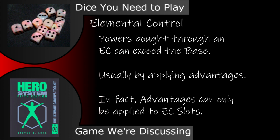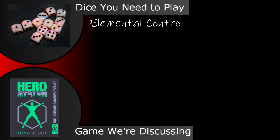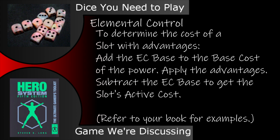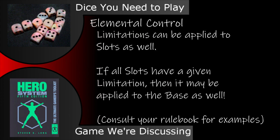It's possible to have powers that can cost more than the elemental control, such as getting a lot of advantages on a single slot. Advantages can only be applied to the slots in an elemental control. If you have a power that has an active cost greater than the base control, you determine what the final active cost of the slot would be and subtract the base from that to get the active cost of the slot. Limitations can be applied to an individual slot, but if it affects every slot, you can also make it apply to the base cost of the control, lowering the real cost of all the slots as well as the base.